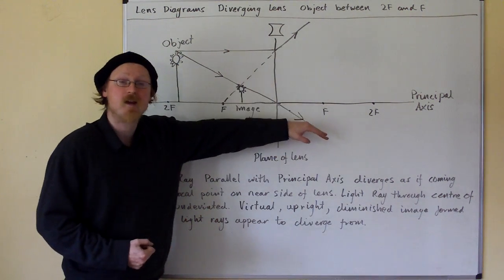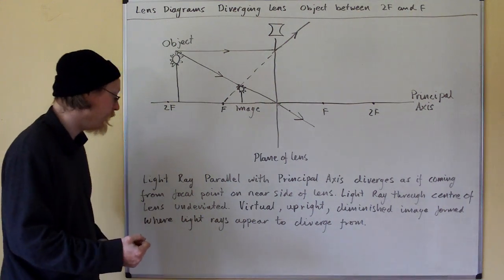The light ray that goes through the centre of the lens is undeviated as before.